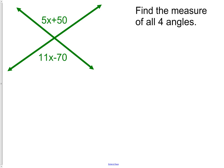Here's a question regarding vertical angles. Find all four angles measurements. In order to do this, we will set 5x plus 50 equal to 11x minus 70. The reason we can do this is because they are vertical angles, and vertical angles are congruent.